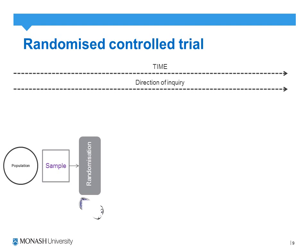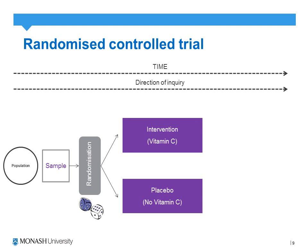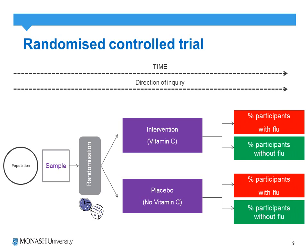Once we've identified our sample, we randomize them to either the intervention group or the control group — in this case, vitamin C versus no vitamin C as our placebo — and follow them up for a set period, whether short duration such as one week or one month, or a longer duration. At the outcome assessment stage, investigators should ideally be blinded to which group participants were allocated.